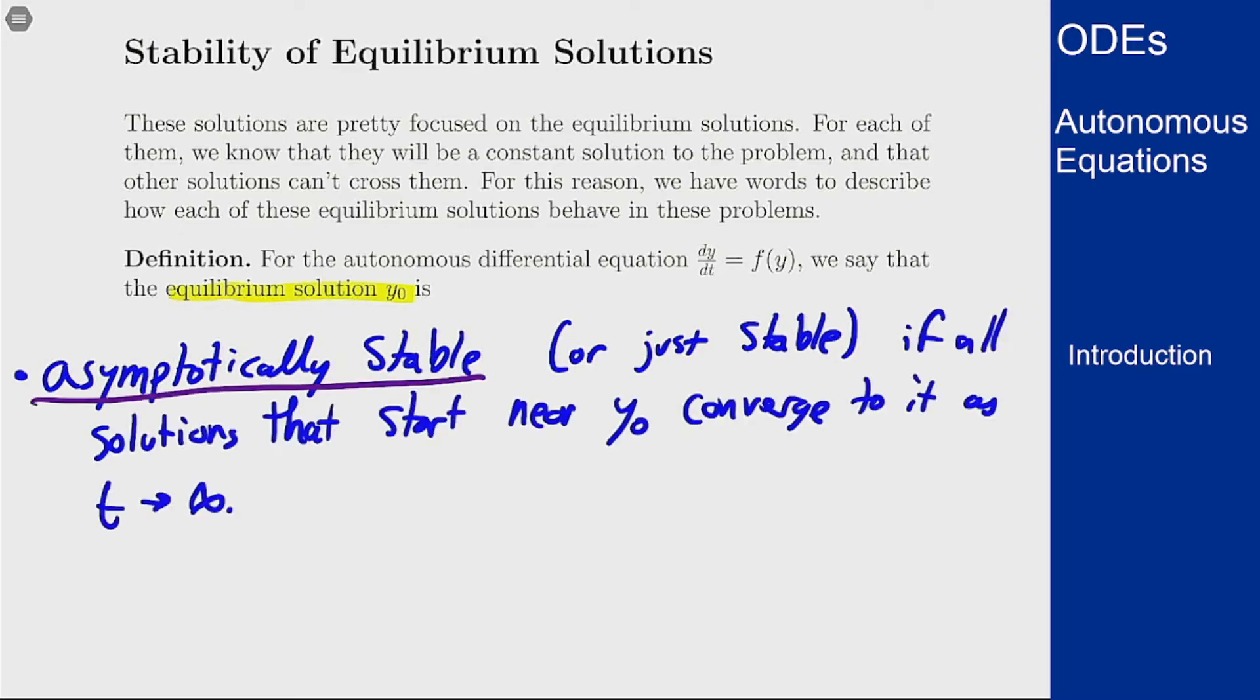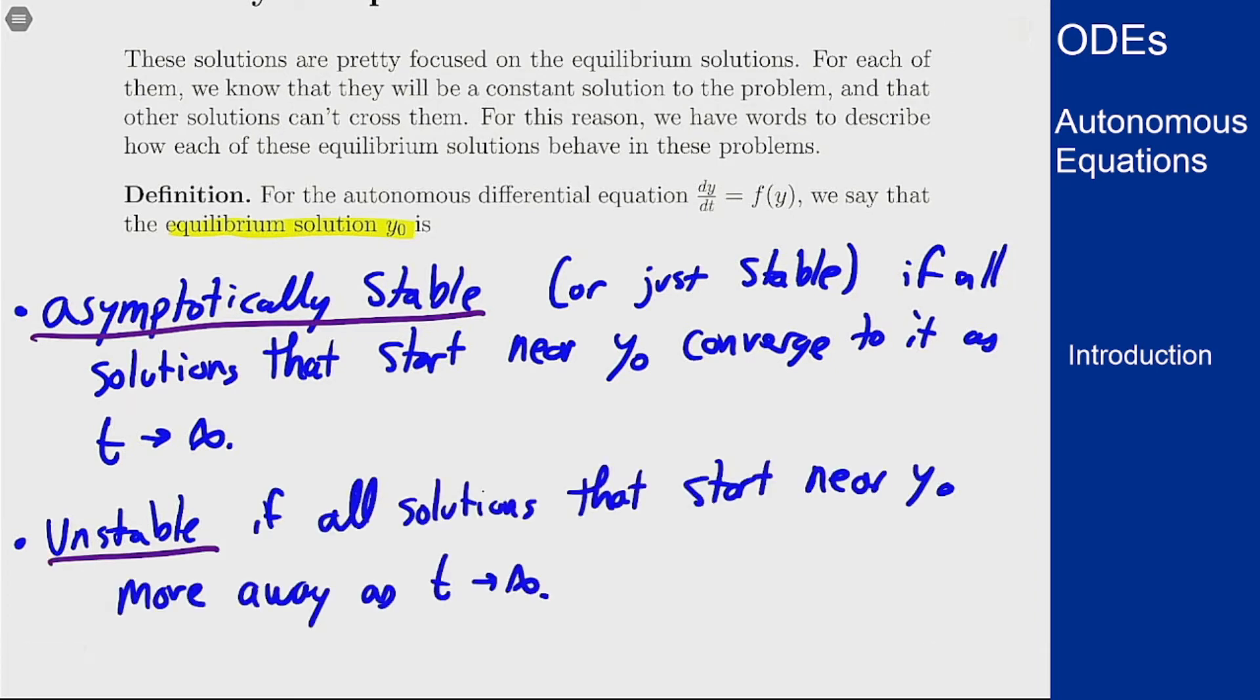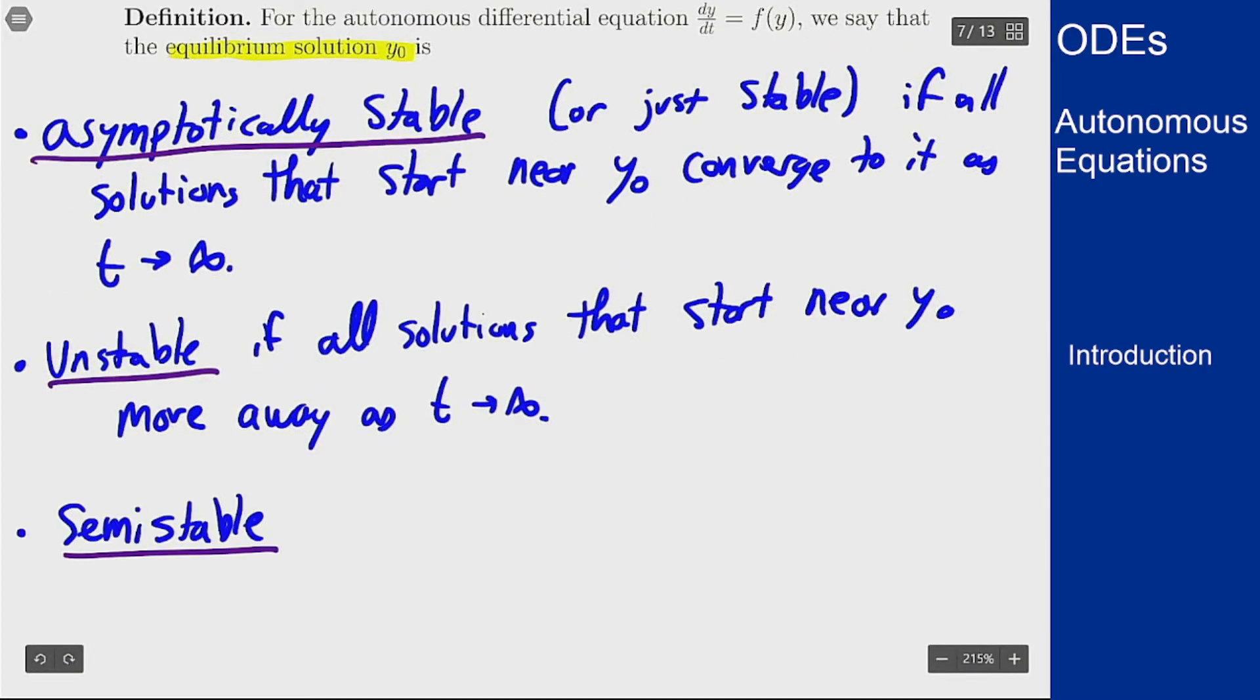The opposite idea is that of it being unstable, and that is if all solutions that start nearby go away as t goes to infinity. And in between this we have semi-stable equilibrium solutions, and this basically means that some go away and some come towards this y₀ as time goes on.